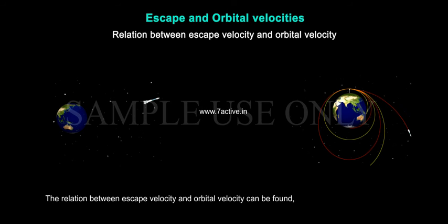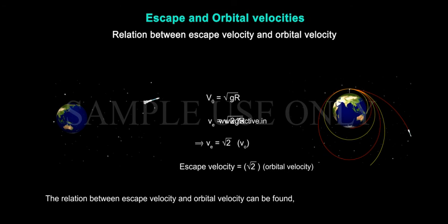The relation between escape velocity and orbital velocity can be found as follows. We know that v_o is equal to square root of GM by R and v_e is equal to square root of 2GM by R, which implies v_e is equal to square root of 2 times v_o. Therefore, escape velocity is equal to square root of 2 times orbital velocity.